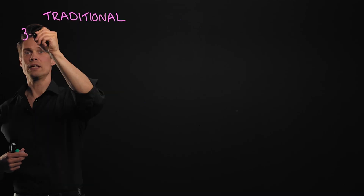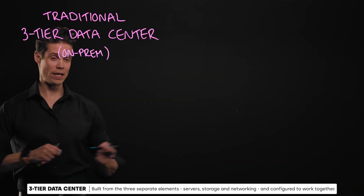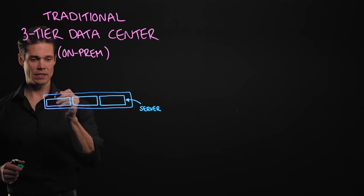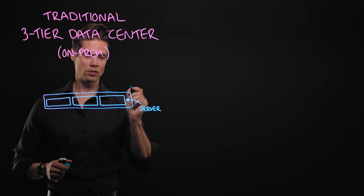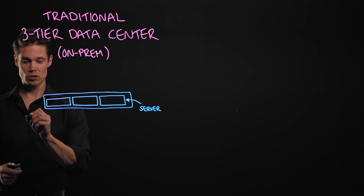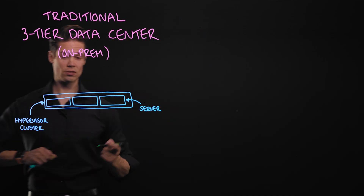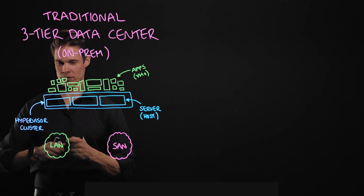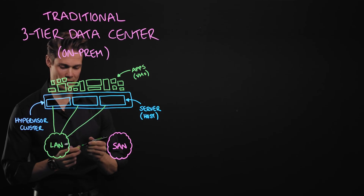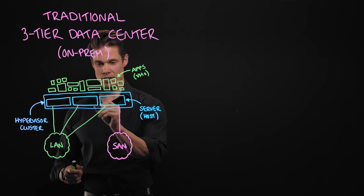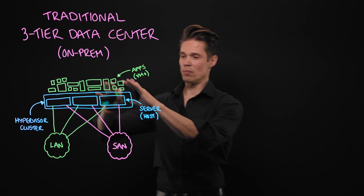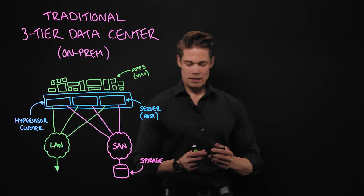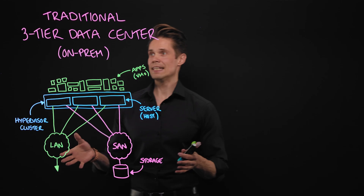So we have a traditional three-tier data center — let's say three compute nodes. These days, we are of course clustering everything using some kind of virtualization method. In this example, let's use a hypervisor, which is server virtualization, and then we can run a bunch of applications. We also need networks: a LAN network to make all the servers or hosts talk together, and a SAN storage area network to provide access from all the servers to the shared storage. Very simple, traditional three-tier data center.